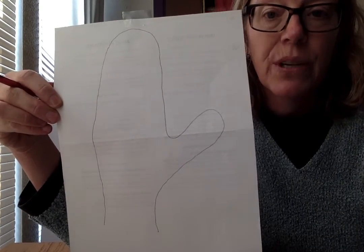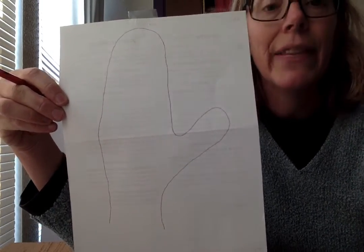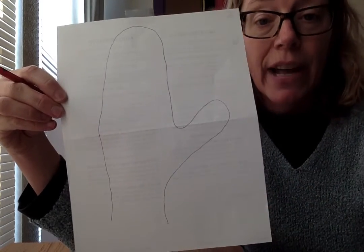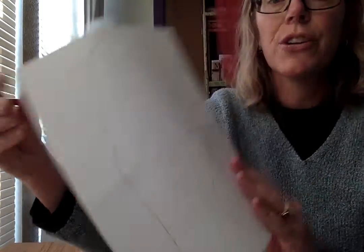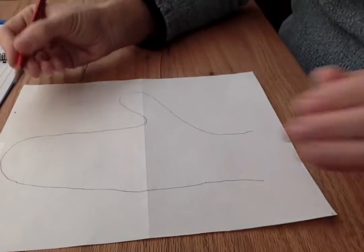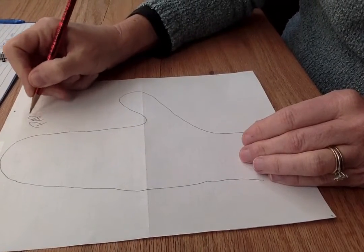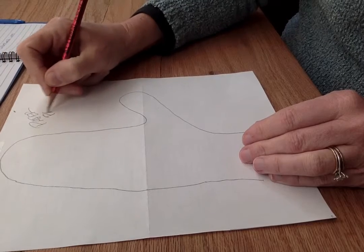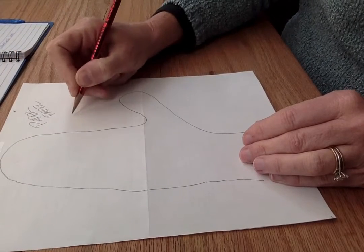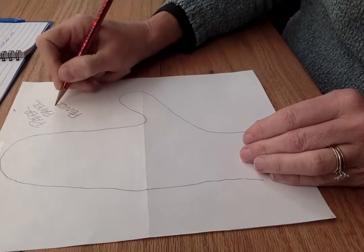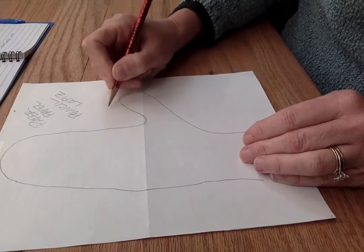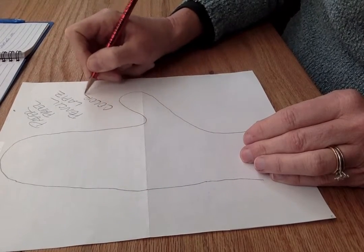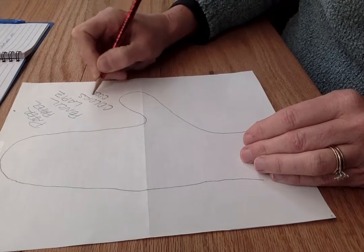So trace your mitten and then you're gonna start adding designs. What supplies do we need for this project? Well today you're gonna need paper, papel, pencil, lapis, and colors, colores.